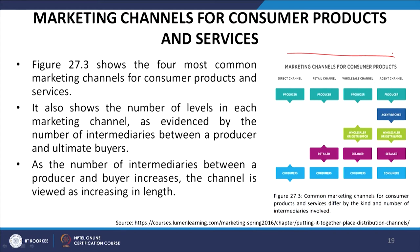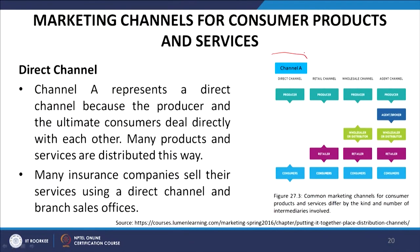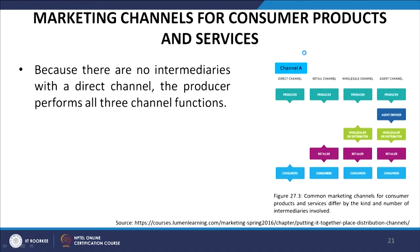Figure 27.3 shows the four most common marketing channels for consumer products and services, along with the number of levels in each. As the number of intermediaries between a producer and buyer increases, the channel is viewed as increasing in length. Channel A represents a direct channel because the producer and ultimate consumer deal directly with each other. Many products and services are distributed this way — for example, many insurance companies sell their services using a direct channel through branch sales offices. With a direct channel, the producer performs all three channel functions.